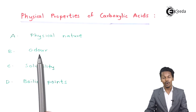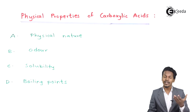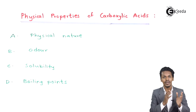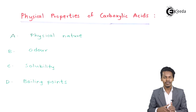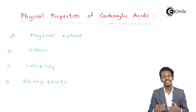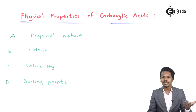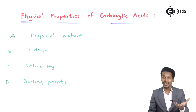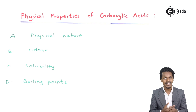Talking about the next point — odor, that is smell. The aliphatic carboxylic acids with a carbon range from carbon number 1 to carbon number 9 have a pungent smell. The carboxylic acids with a carbon content more than 9 are basically odorless. So the higher carboxylic acids are in waxy solid form and are odorless.